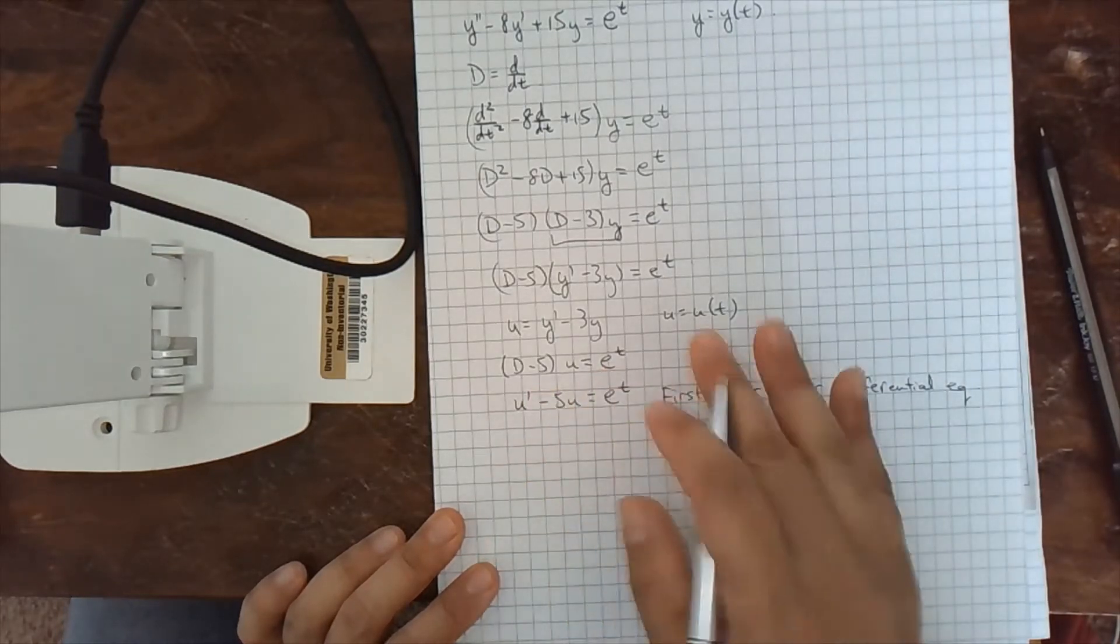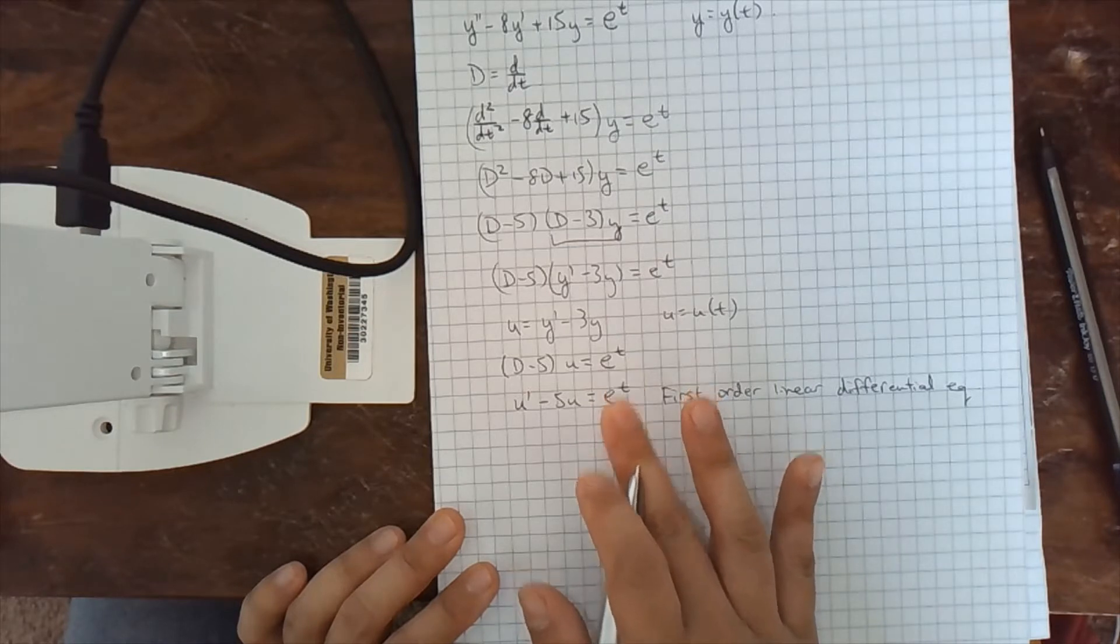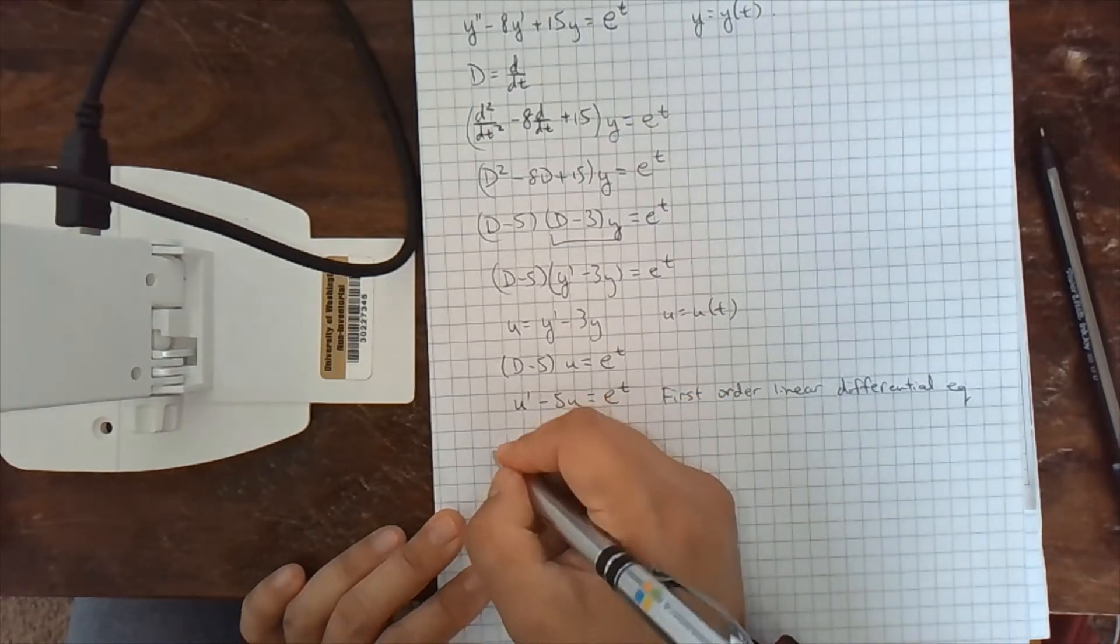In the last problem we had 0 over here. So it was easier because it was homogeneous. But linear we can do. We need an integrating factor.